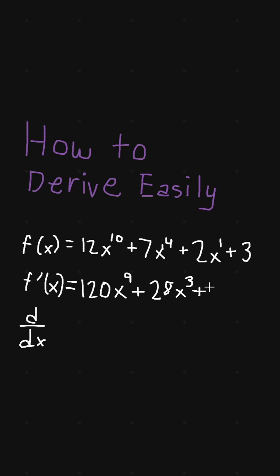If we want to do 1 times 2, we get 2, and then x to the 1 minus 1, which equals 0. Anything to the power of 0 equals 1, so we get 2. The derivative of a constant is 0, so we don't have to write anything there.